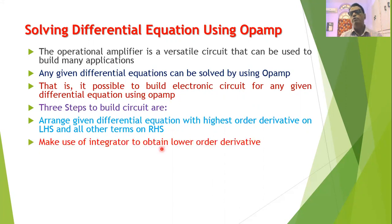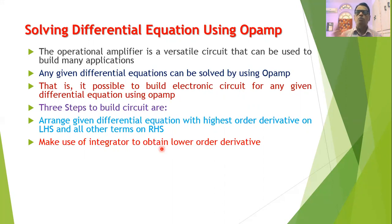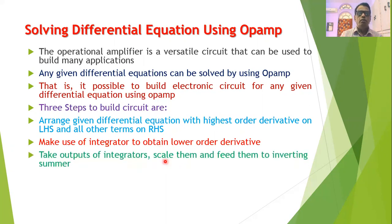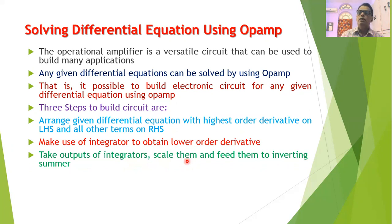When we make use of integrators, we can obtain lower derivative terms. For example, if the input to an integrator is d²x/dt², then at its output we can get dx/dt. The outputs of the integrators are then fed to the summer or inverting summer circuit, scaled according to the given differential equation, so that we are practically building the circuit for the complete differential equation.